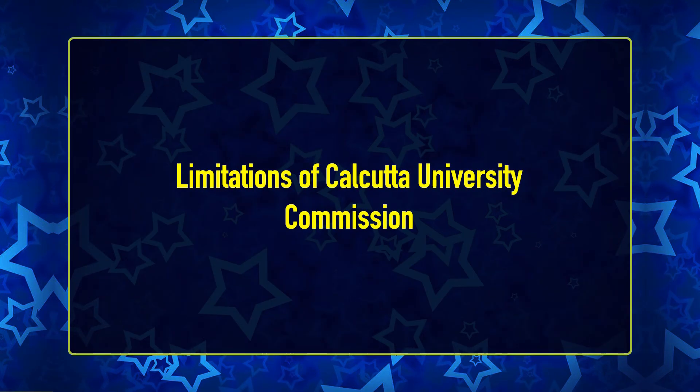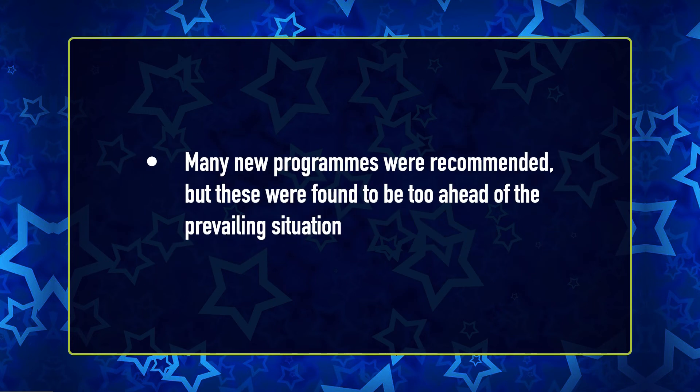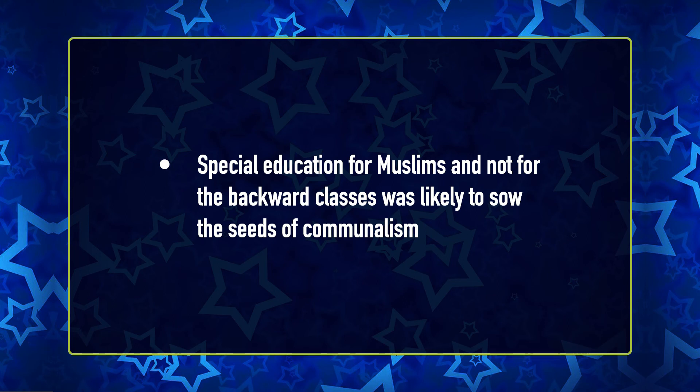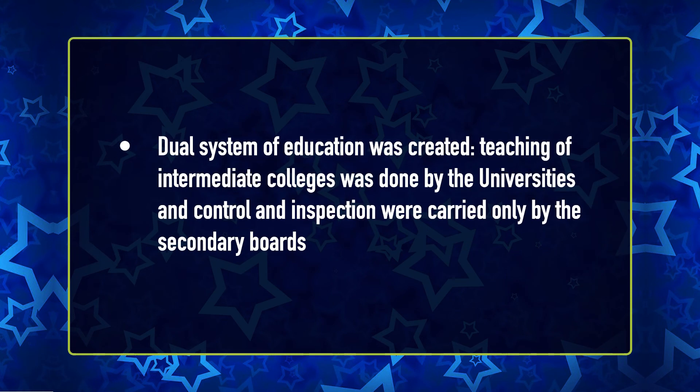The limitations of the Calcutta University Commission are as follows: first, many new programs recommended were found to be too far ahead of the prevailing situation — for example, Calcutta University was modelled on the pattern of Cambridge and Oxford, but conditions in India were different, and the provincial board of education was much ahead of its times; second, special education for Muslims and not for backward classes was likely to sow the seeds of communalism; and third, a dual system of education was created, where teaching of intermediate colleges was done by the universities while control and inspection were carried out only by secondary boards.